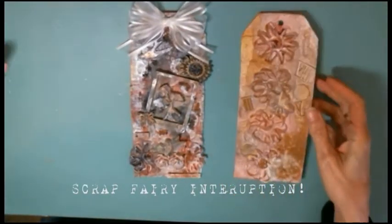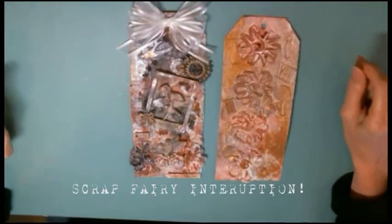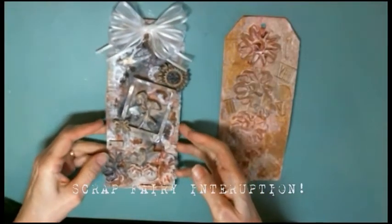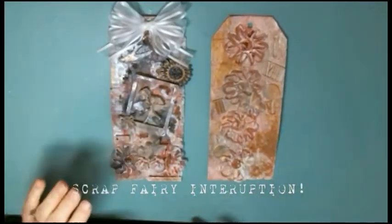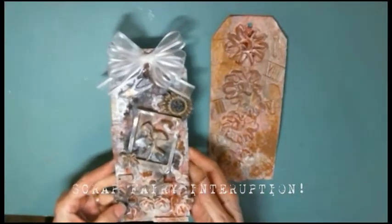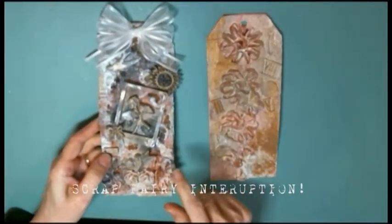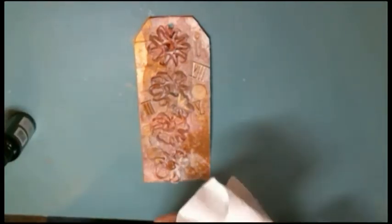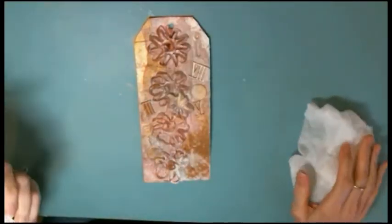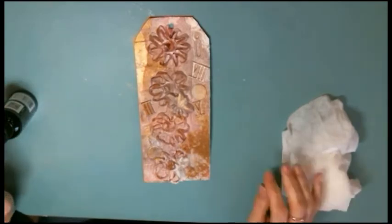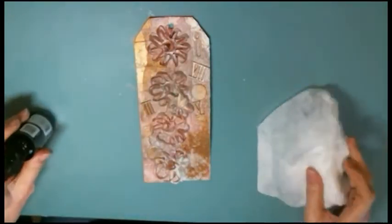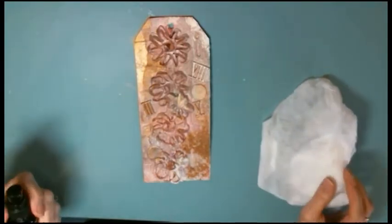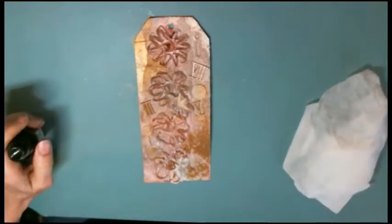Sometimes the scrap fairy comes into my studio and messes with my head. And do you know what she did today? She turned off my camera when I was doing a very crucial part of this video for this tag. So I'm going to show you what's missing with this other tag that was just kind of a practice play-around tag. I've got some Delusions black ink spray. And I have a very damp paper towel. And I'm going to spray this tag with the black Delusions and then I'm going to blot it up. And what that does is it kind of gets down into the creeks and the crevices and brings out definition and also gives it a grungy look. So here it goes.